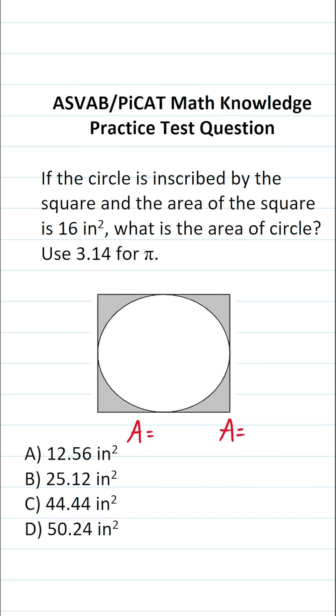The formula to calculate the area of a square is going to be s squared, where s is the side length of the square. The formula to calculate the area of a circle is pi r squared, where r is the radius of the circle. What's more, we also know according to this problem that the area of this square is 16 square inches.